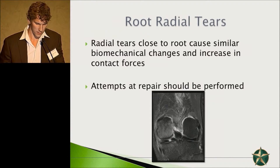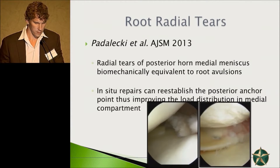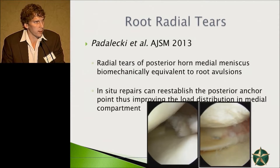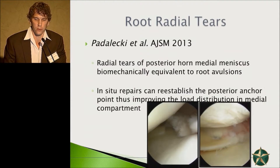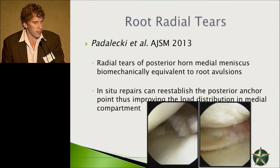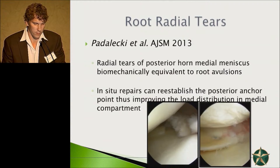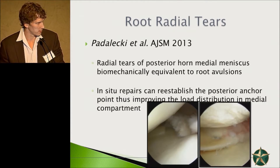You can see the radial split here again in the coronal cut of the MRI, which makes repair more challenging. A great study by my colleague Dr. Padalecki, with the help of LeProd's team, looked at radial tears of the posterior horn of the medial meniscus. Basically, these were biomechanically equivalent to root avulsions. He examined tears at three, six, and nine millimeters from the actual root, and his data proved that in situ repairs can reestablish the posterior anchor point, improving load distribution in the medial compartment at least at time zero.